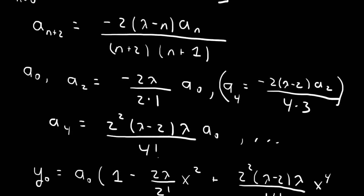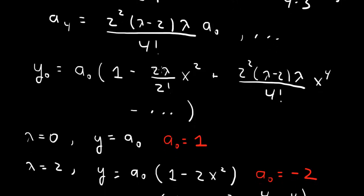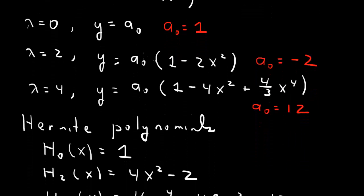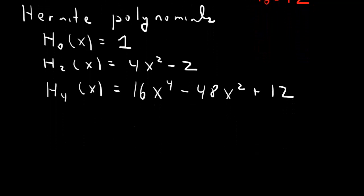To find the odd Hermite polynomials, start with n=1, determine a₃, then a₅, and write down the series for λ=1, λ=3, and λ=5. Then determine the normalizations to pull out the first three odd Hermite polynomials. I leave that as an exercise.